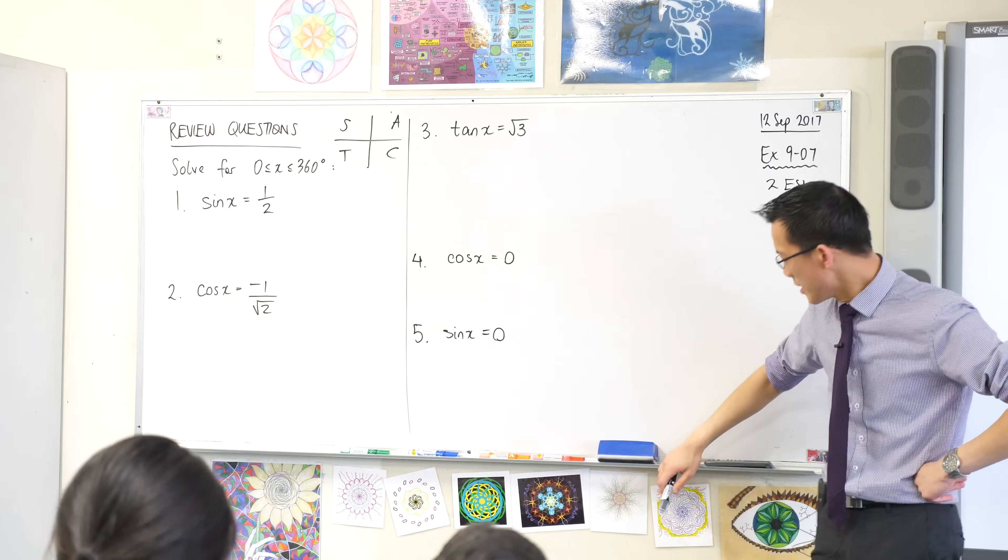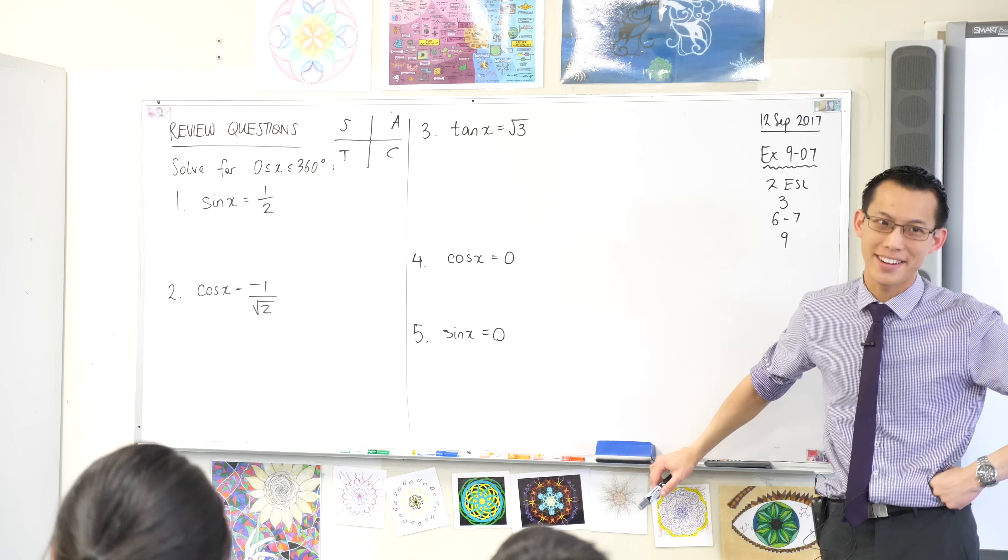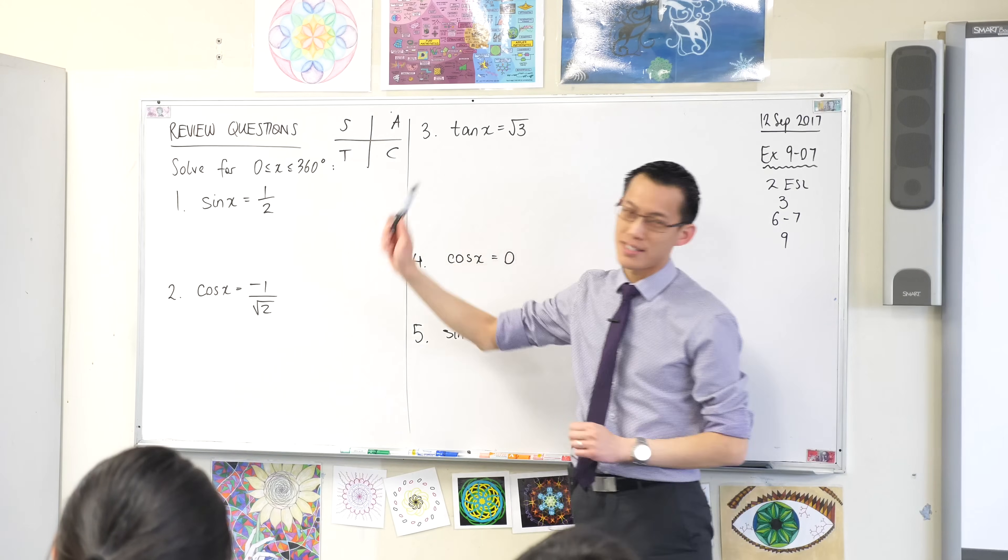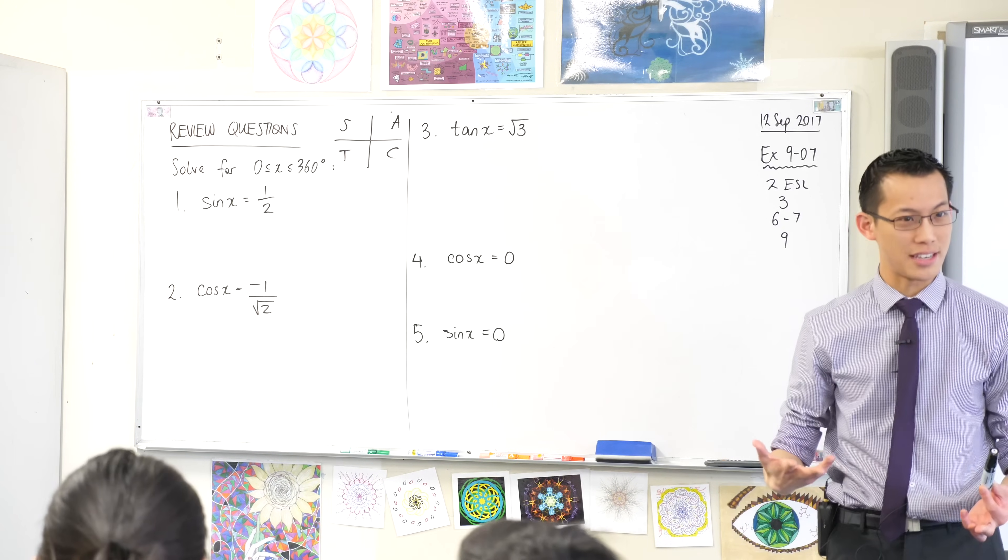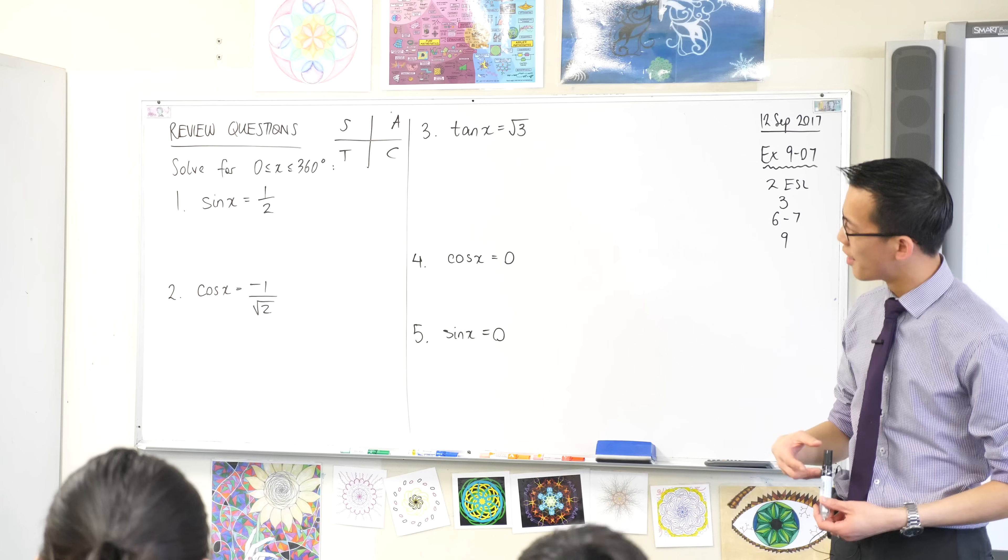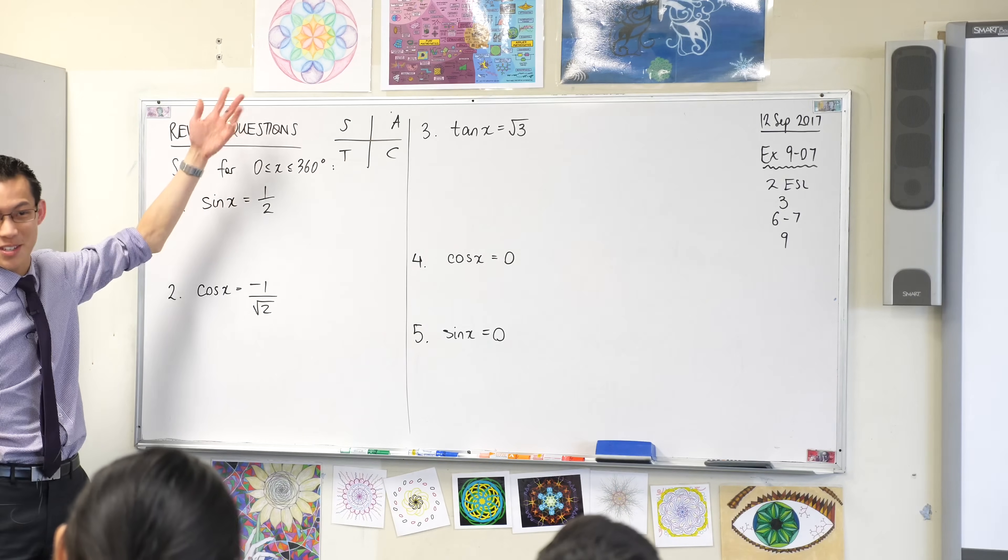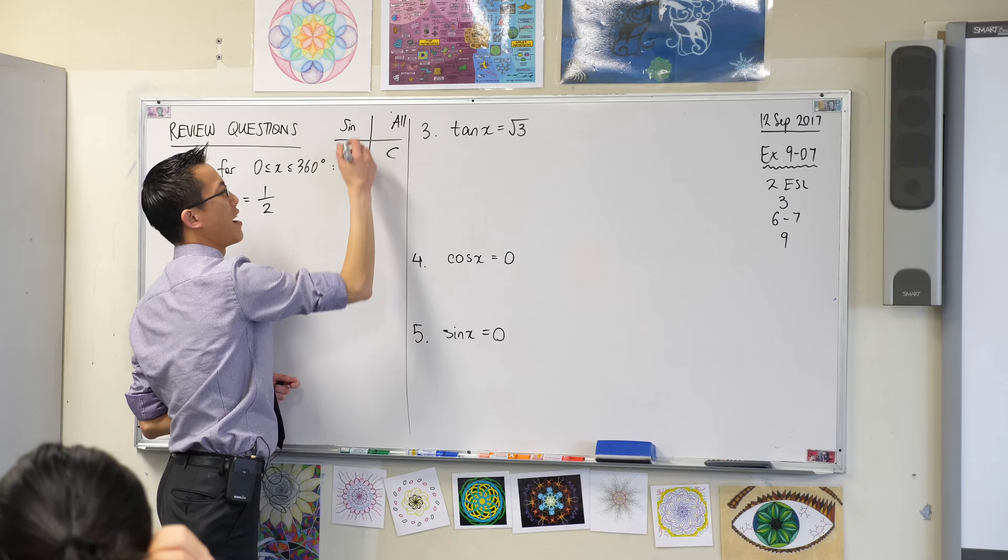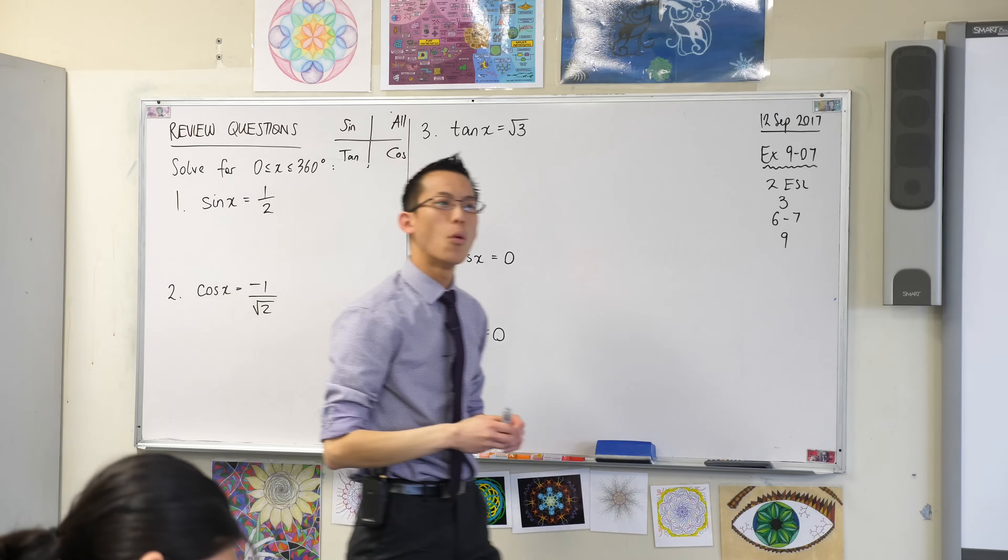So this is a little scheme here that will help you use the unit circle without drawing a unit circle. A, S, T, C. A little mnemonic that might help you remember those in order is all stations to central. There are other versions as well, but that's the most polite one. Now all stations to central, what does it stand for? It stands for all sine tan and cos. What does it mean?